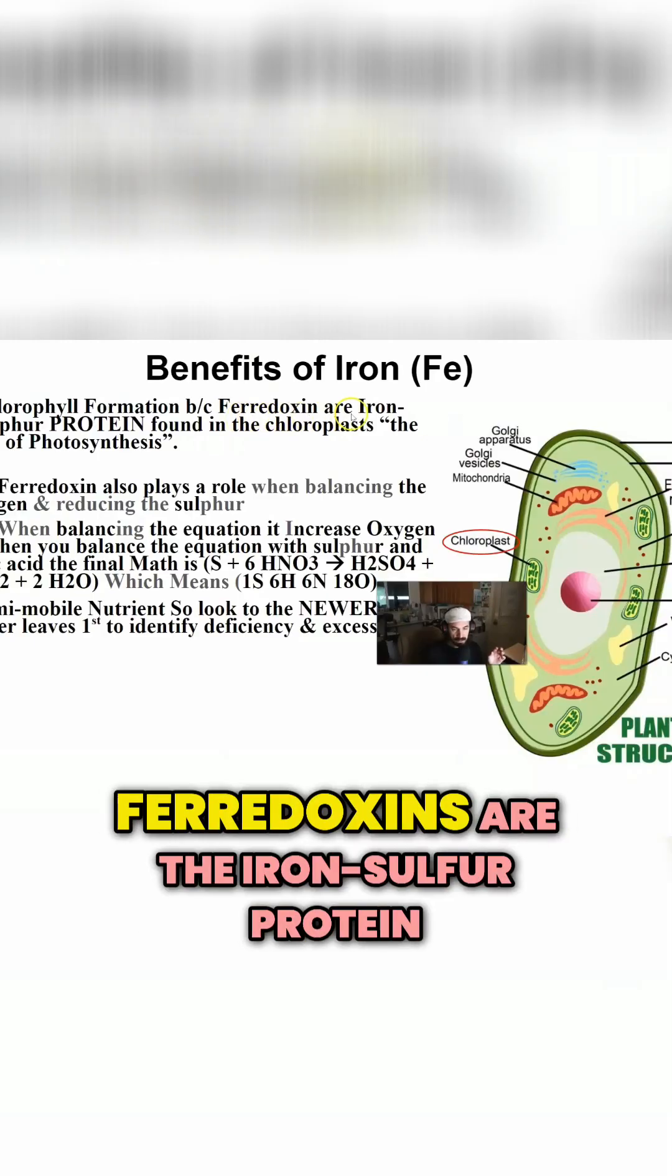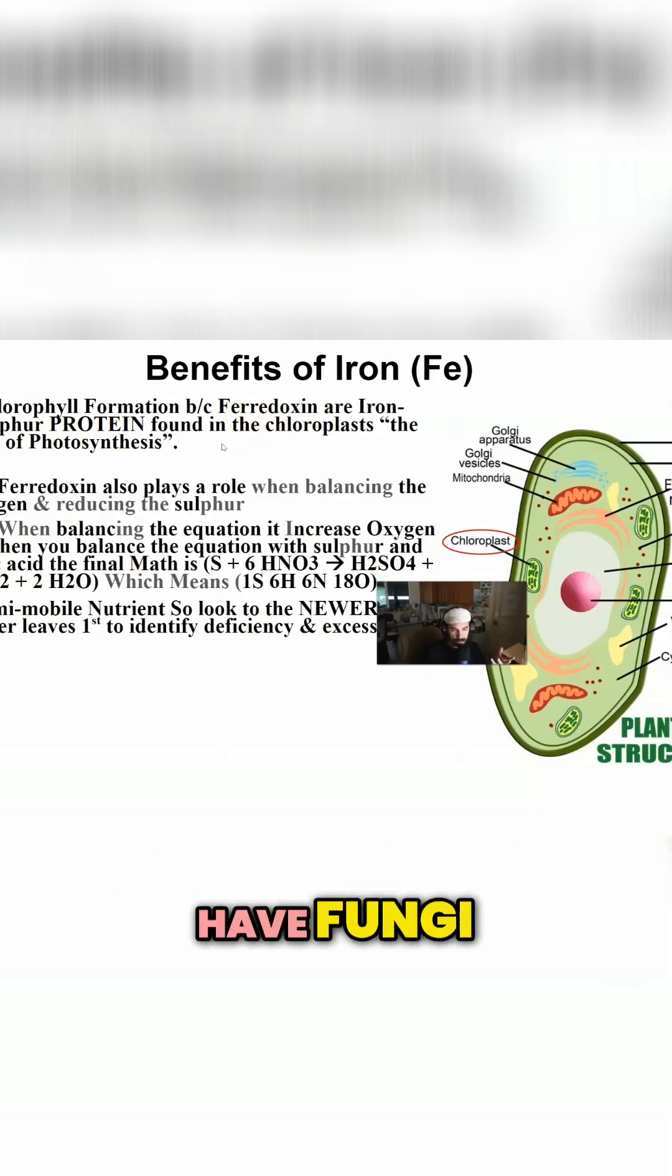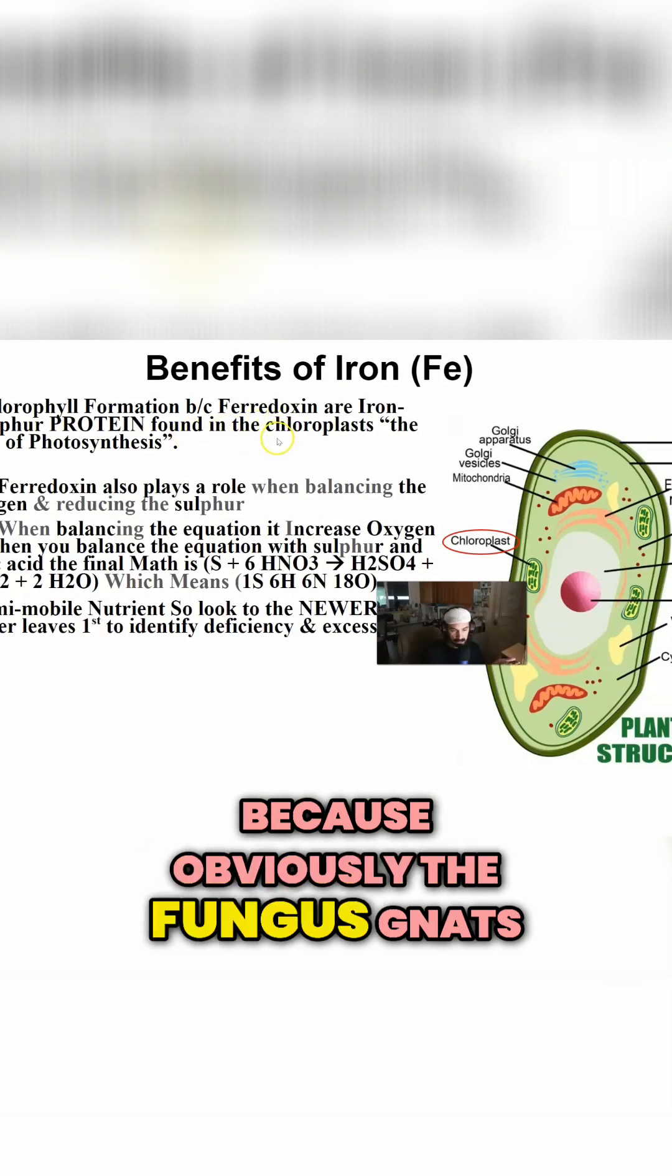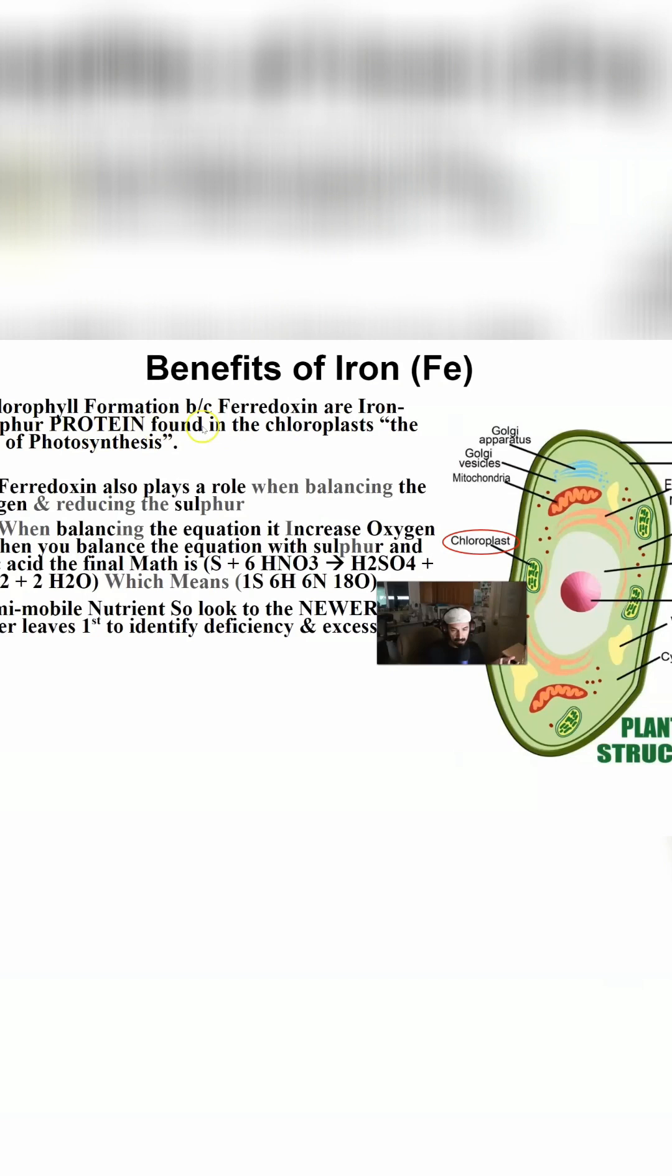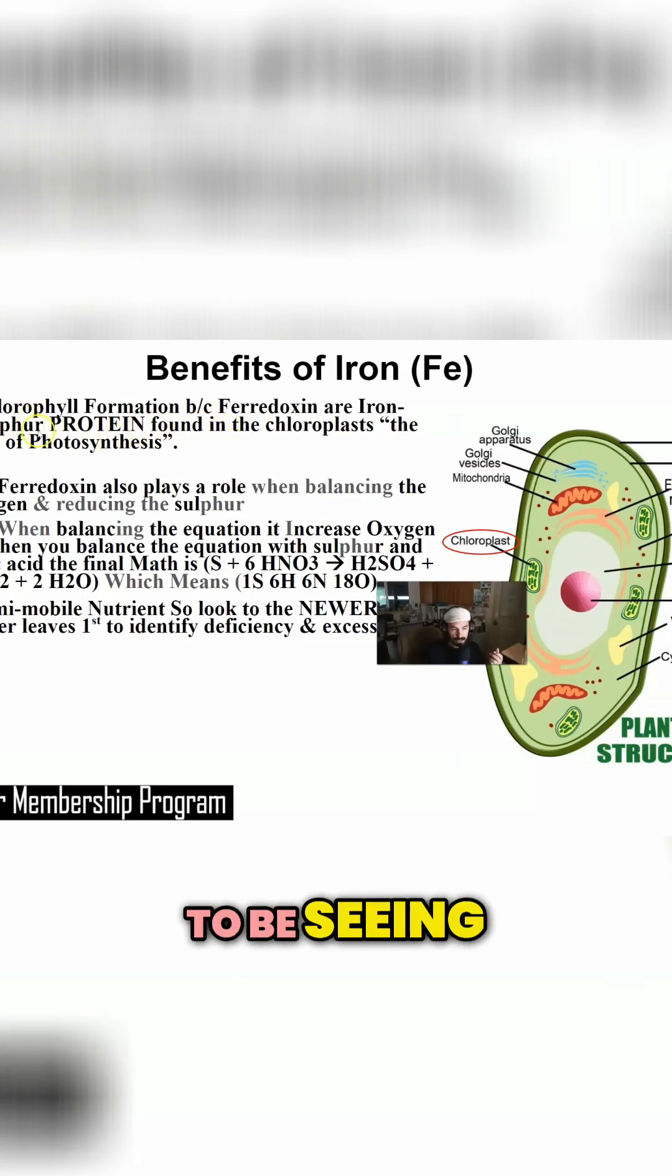Specifically, ferrodoxins are the iron-sulfur protein. And when you don't have fungi, because the fungus gnats are eating it, or the larvae specifically, there's not going to be sulfur availability. And obviously, you're going to be receiving an iron and sulfur deficiency.